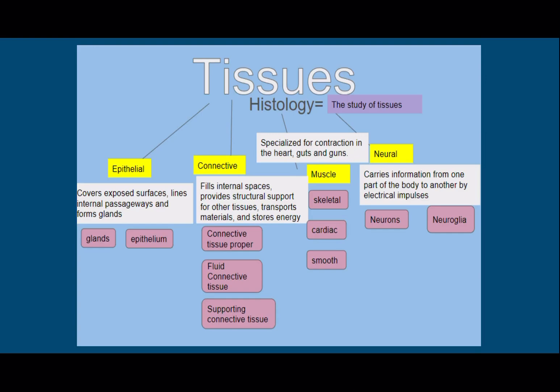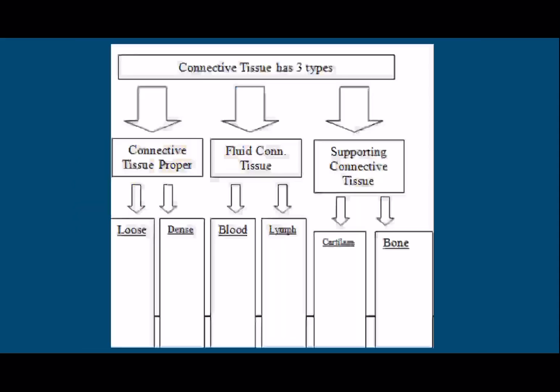Hi students. I'm going to talk to you a little bit about tissues today, specifically connective tissues. As you know, we've been studying histology, which is the study of tissues, and we've been working on epithelial. But now we're going to focus our attention on connective, which is the most varied and vast of the tissue types. It can get a little challenging to keep it straight, so I'm going to keep referring back to this graphic just to help you keep in perspective where we are as we go through.